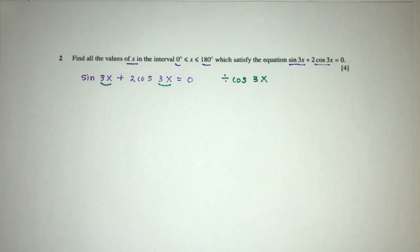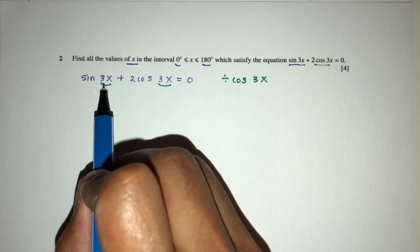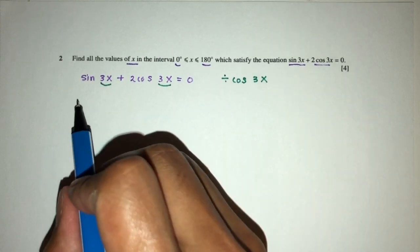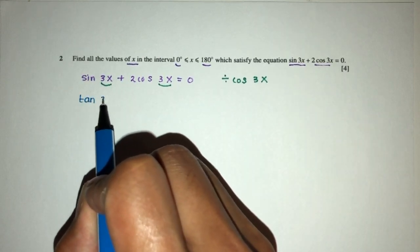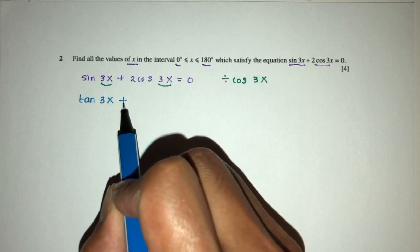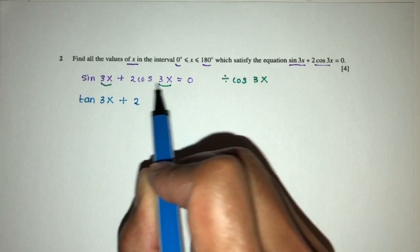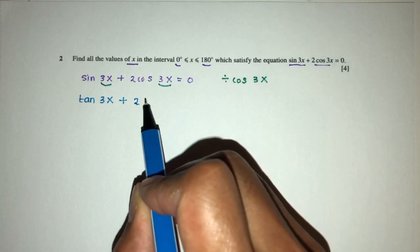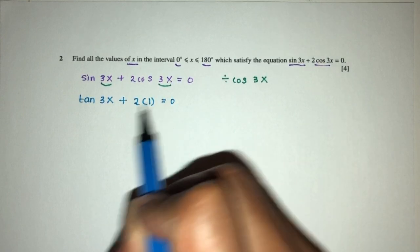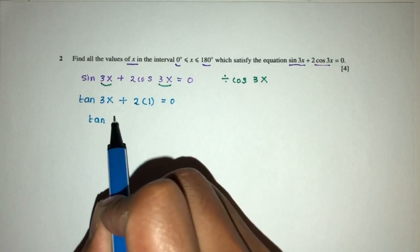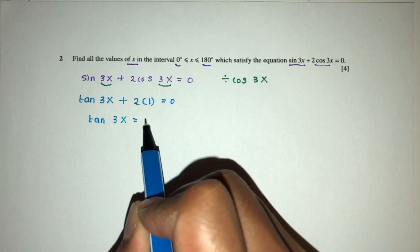So sine 3x divided by cos 3x, you will have sine over cos, that will be tan 3x. And here we have 2 cos 3x divided by cos 3x, that will be 1, equal to 0. So tan 3x equal to minus 2.